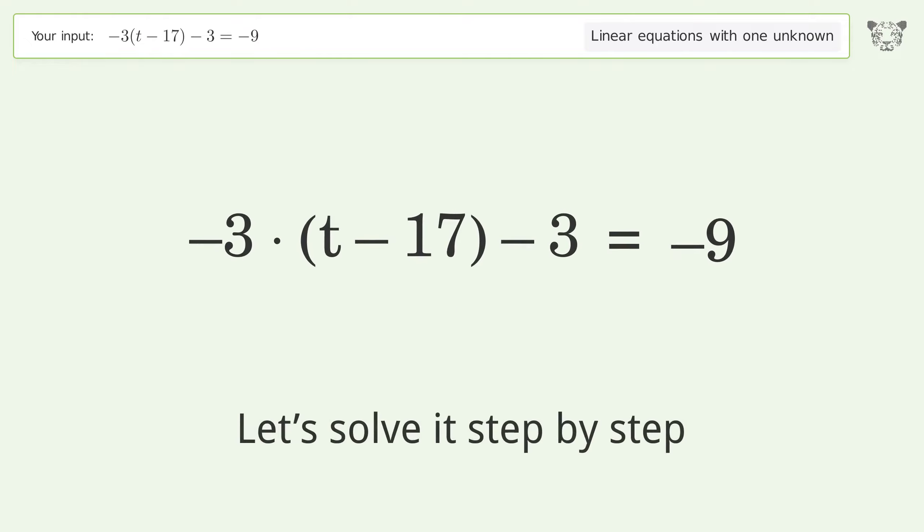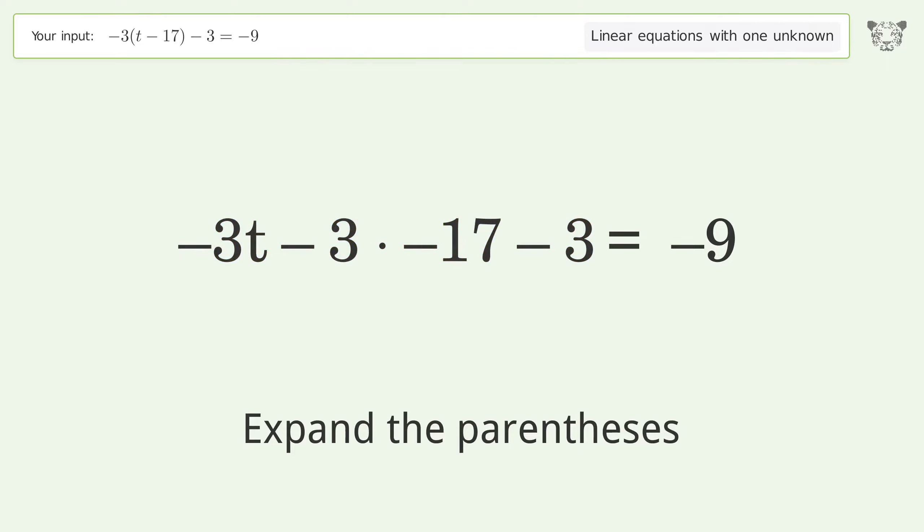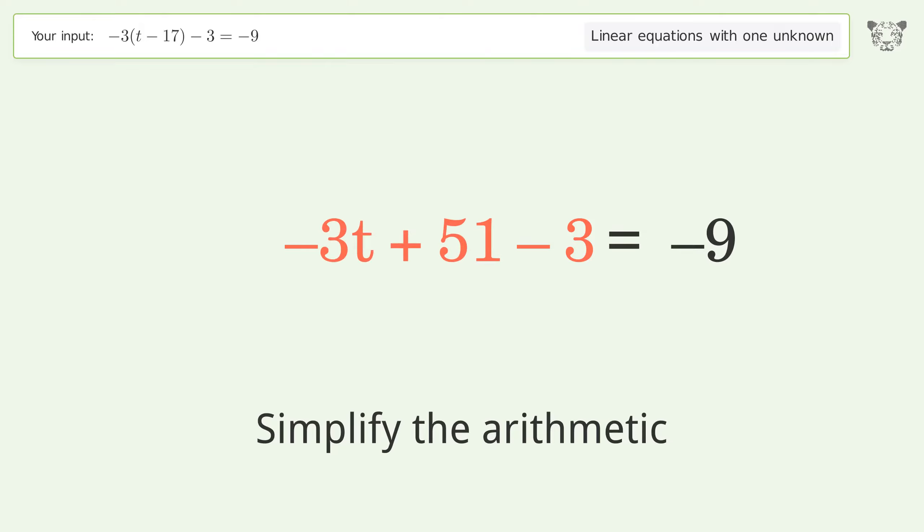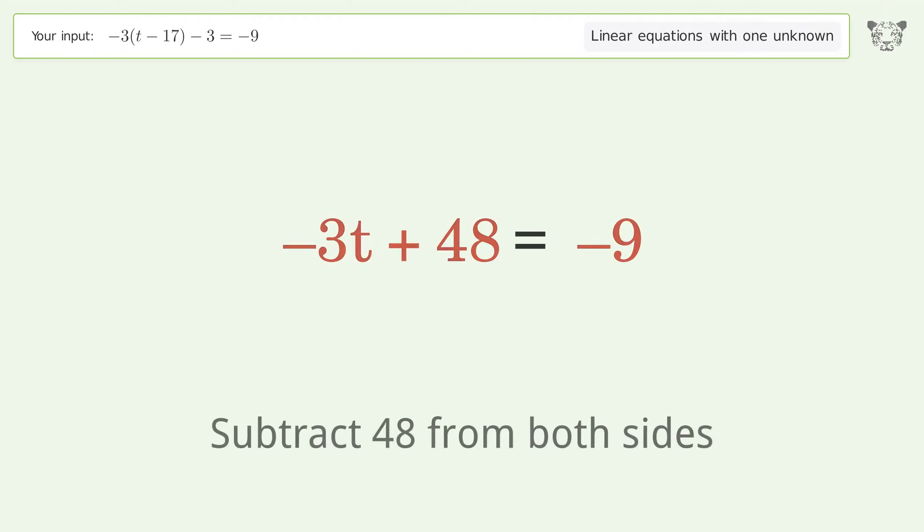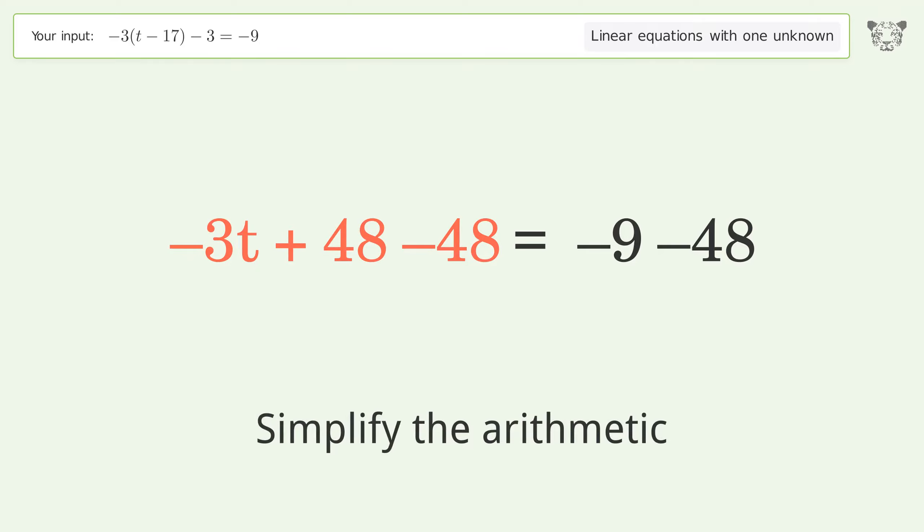Let's solve it step by step. Simplify the expression. Expand the parentheses. Simplify the arithmetic. Group all constants on the right side of the equation. Subtract 48 from both sides. Simplify the arithmetic.